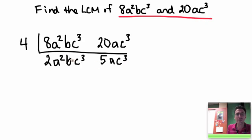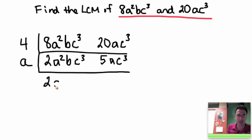2 and 5 have no common factors, so now I'm going to work with the variables. I'm going to go one variable at a time. I'm just going to focus on the a's. I have a squared and I have a. Well, the smallest factor of a squared and a, or the common factor, is 1a. So I've got 2a squared divided by a is abc cubed, and 5a divided by a is 1, so we don't write it, c cubed.